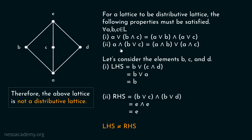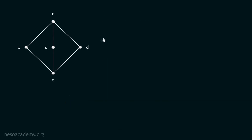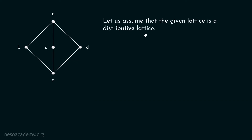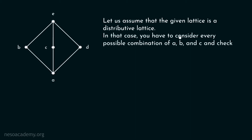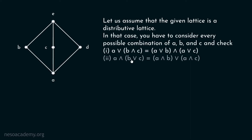We checked only one property, and LHS is not equal to RHS, so the lattice is not a distributive lattice. Now, if we were to assume this lattice is distributive, we would have to consider every possible combination of A, B, and C — such as B,C,E then C,D,E then A,B,C and so on — and check both properties. This is quite a tedious and time-consuming process.